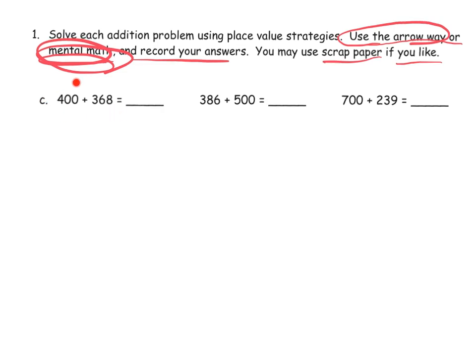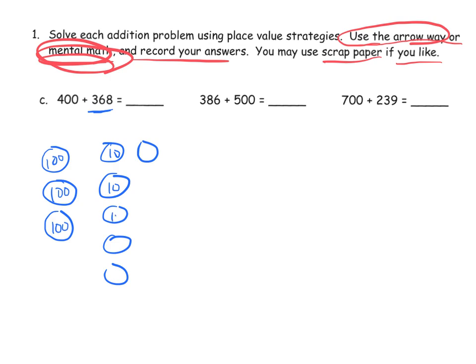So let's do this problem right here. It says 400 plus 368. So the idea would be students might say, well, let's start with 368. What does 368 look like? Well, 368 might look like 100, 100, 100. And then 60 would look like, oh, let's see, 1, 2, 3, 4, 5, 6. So these are 10s. 10, 20, 30, 40, 50, 60. And then 8 would be 1, 2, 3, 4, 5, 6, 7, 8.